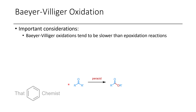The Baeyer-Villiger oxidation reaction is one where you take a ketone or an aldehyde and it's converted to an ester, or in the case of some aldehydes, a carboxylic acid. This is actually a very predictable reaction and you can usually predict the outcome — you'll only get one product most of the time. There are also enzymes that do these reactions, and they can be more selective. But most of the time these are just done with MCPBA, which is the peracid of choice.